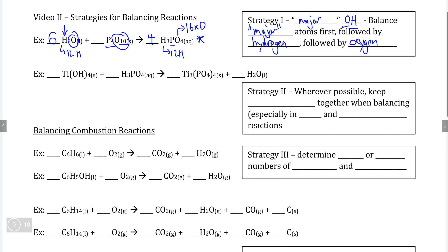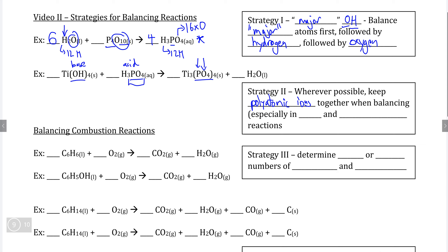The second equation is tricky because of the large number of polyatomic ions. Since this is a neutralization reaction, we have an acid and a base, and hydroxide does not appear in the products because it has been neutralized by the hydrogen in the acid. When dealing with polyatomic ions, it is always easier to treat elements within a polyatomic ion as a single unit rather than individually. This is especially true in double replacement, displacement, or neutralization reactions.